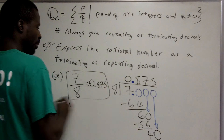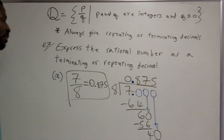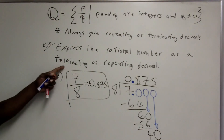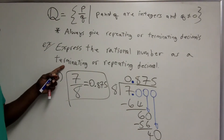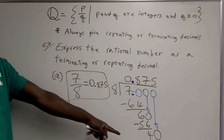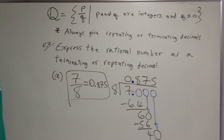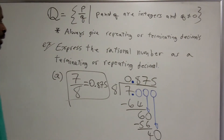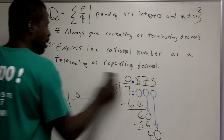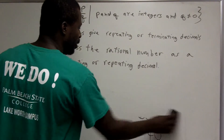So the number 7 eighths as a decimal is the terminating decimal 0.875. This one turned out to be a terminating decimal — terminating means eventually the remainder was 0.